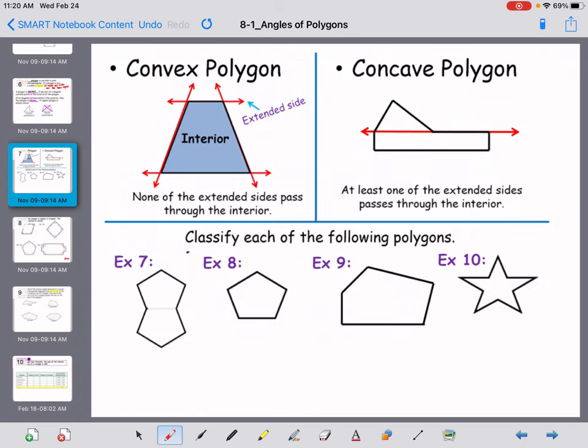So another way you can tell the difference is if you extended the sides, would those sides all extend to the outside part or would they extend into the inside part? Alright, so example seven, this is concave.